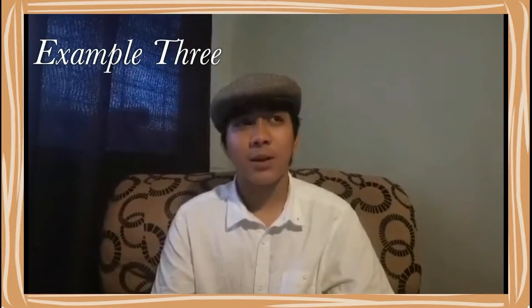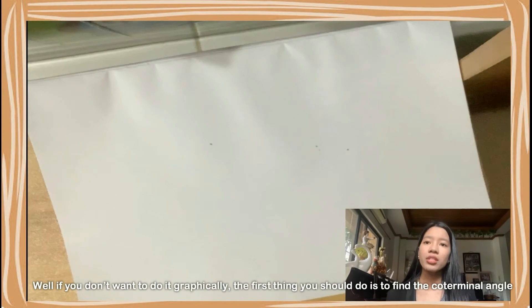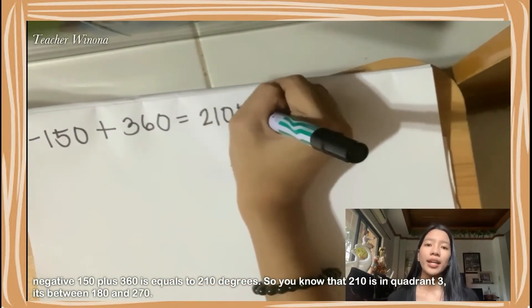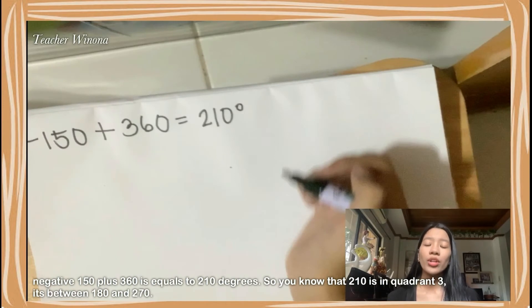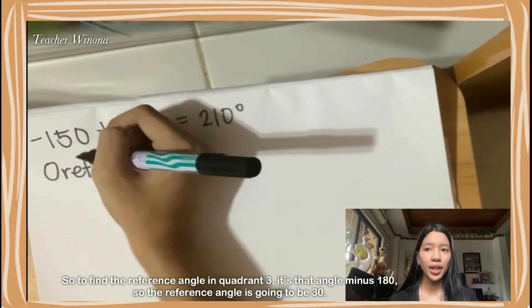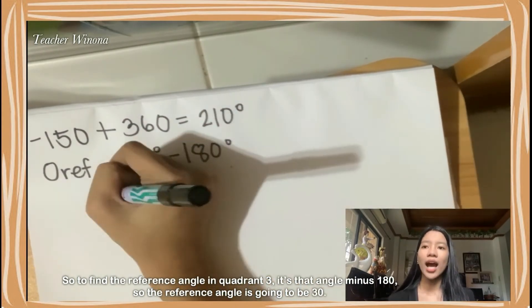What if you want to find the reference angle of a given negative 150 degrees angle? If you don't want to do it graphically, the first thing you should do is find the coterminal angle. Negative 150 plus 360 equals 210 degrees. You know that 210 is in quadrant 3, between 180 and 270. To find the reference angle in quadrant 3, it's that angle minus 180. So the reference angle is going to be 30.